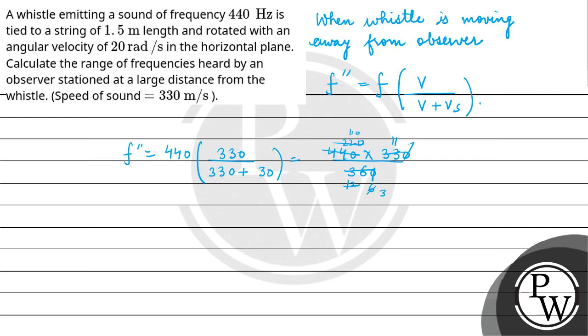So this will be equal to nearly 403.3 Hz. So we have got two frequencies: f' = 484, this is the maximum frequency, and minimum is 403.3 Hz.